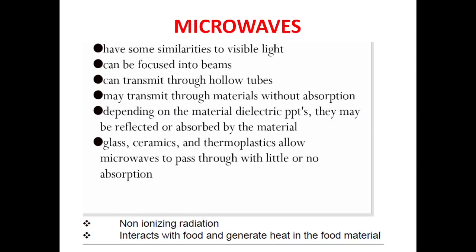Microwaves are non-ionizing radiation and they interact with food to generate heat in the food material. Two important properties are that they are non-ionizing — meaning they do not produce free radicals and are safer to use — and that their interaction with food generates heat, which is the major application we are studying here.